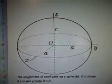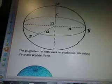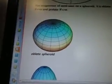Here's a diagram showing the assignment of a semi-axis on a spheroid. It is oblate if c is less than a, and prolate if c is greater than a. Here's an oblate spheroid and a prolate spheroid. From Wikipedia: a spheroid or ellipsoid of revolution is a quadric surface obtained by rotating an ellipse about one of its principal axes — in other words, an ellipsoid with two equal semi-diameters.